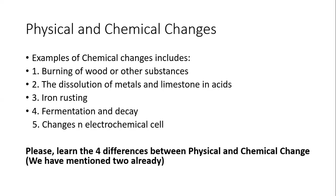An example of chemical change is burning of wood. When you light a matchstick, fire comes out, heat and light are released, smoke is produced, and what is left is ash, which is carbon. New substances are formed — from matchstick to carbon, from wood or cellulose to carbon. Whenever new substances are formed from old ones, a chemical change has occurred. Other examples include fermentation and decay, changes in an electrochemical cell or battery — that's why batteries get used up — and dissolution of metals and limestone in acids.